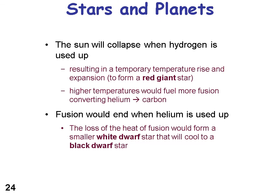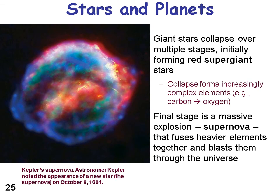Giant stars collapse over multiple stages, initially forming supergiant stars. The final stage is a massive explosion — a supernova — that fuses heavier elements together and blasts them throughout the universe. Heavier elements, with many protons in the nucleus, are formed in these supernova explosions. When you look at the periodic table, it's interesting to think that the elements you see there came from stars — what a wonderful tool God made when he created stars to produce the material we see around us.